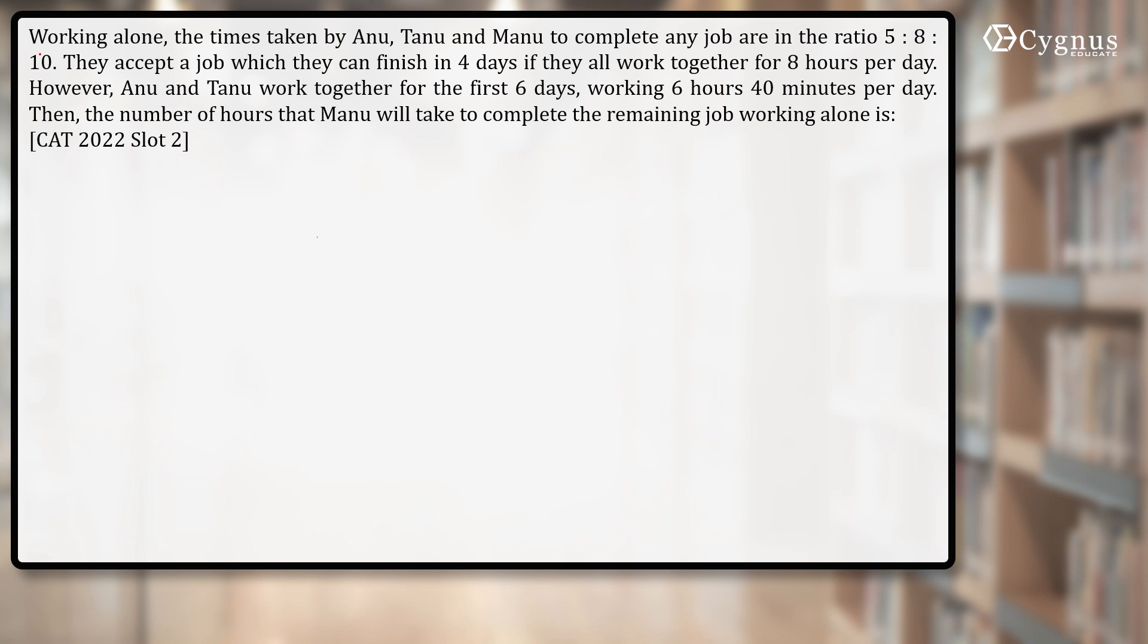Working alone, the times taken by Anu, Tanu and Manu to complete any job are given in the ratio of 5:8:10, and they accept a job which they can finish in four days if they work together.